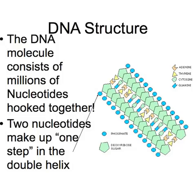The DNA molecule consists of millions and millions of these nucleotides all hooked together. Look carefully in the center — you can see many different shapes of bases hooked together to make up the rungs of the ladder, and the bluish and greenish sides of the ladder are phosphate, sugar, phosphate, sugar on both sides. Two nucleotides make up one rung of the ladder, and millions of steps are included in one DNA molecule.